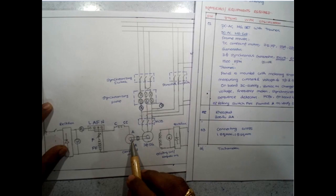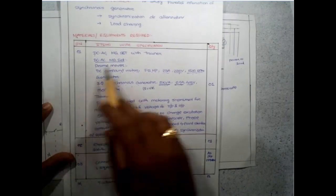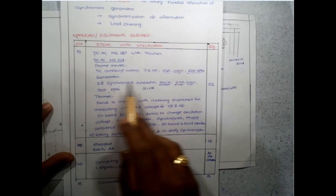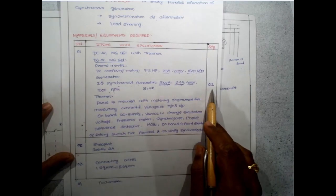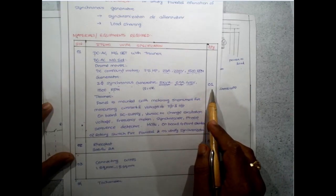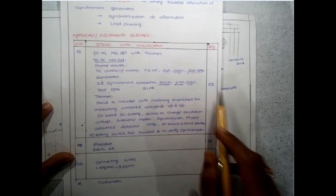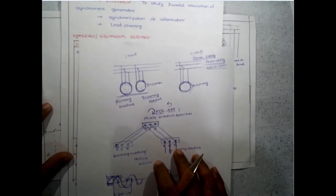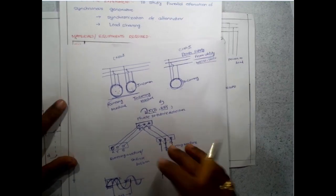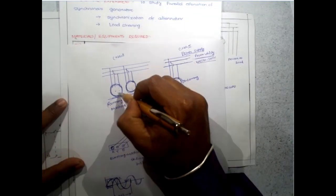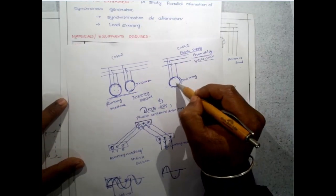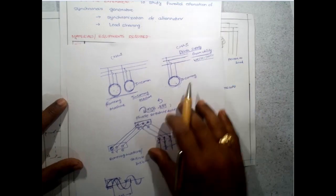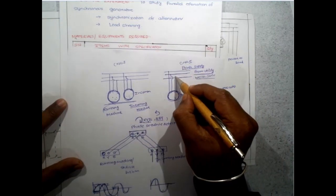Let's go into the theory in detail. The quantity is 1 because we are going to connect the alternator with the infinite bus bar. From this diagram, you can see the alternator — we are connecting this incoming alternator to the bus bar, which is the power we are getting from our utility.